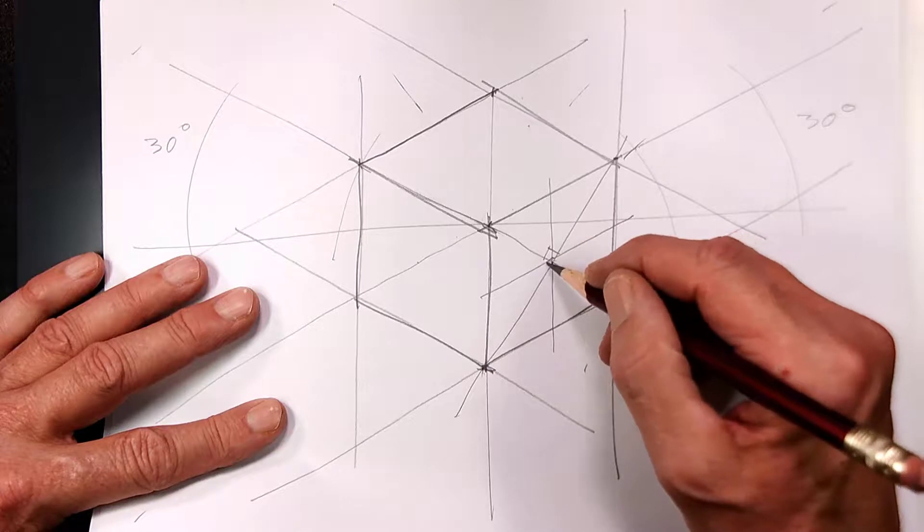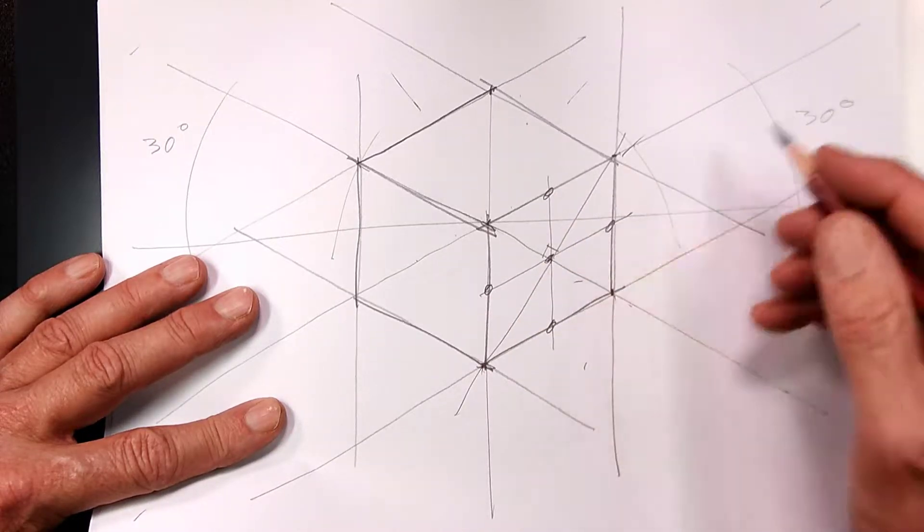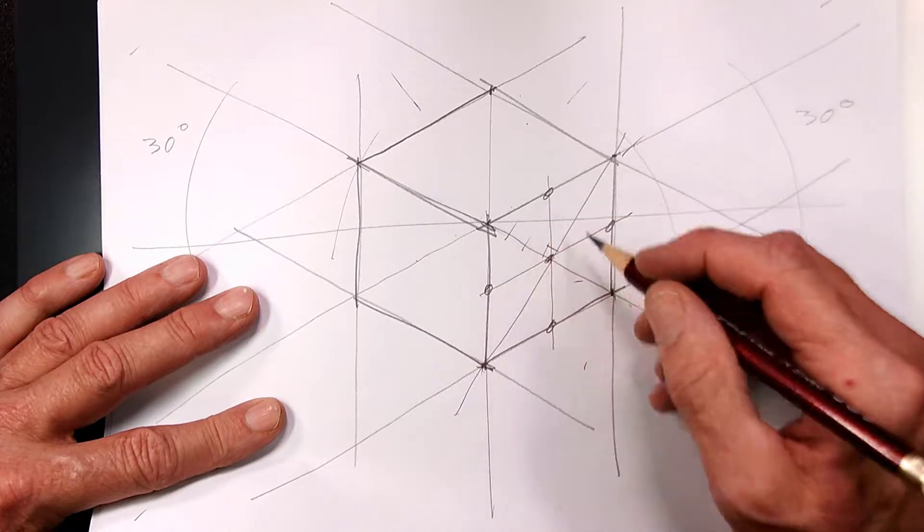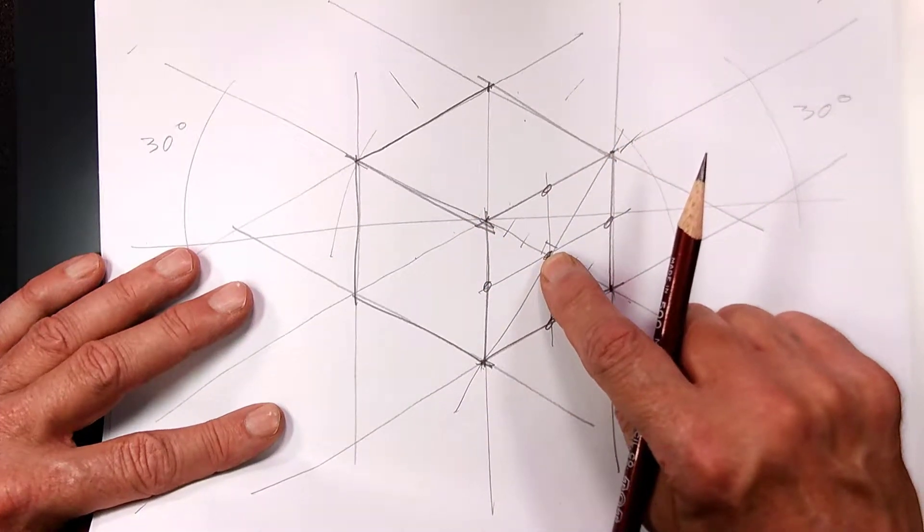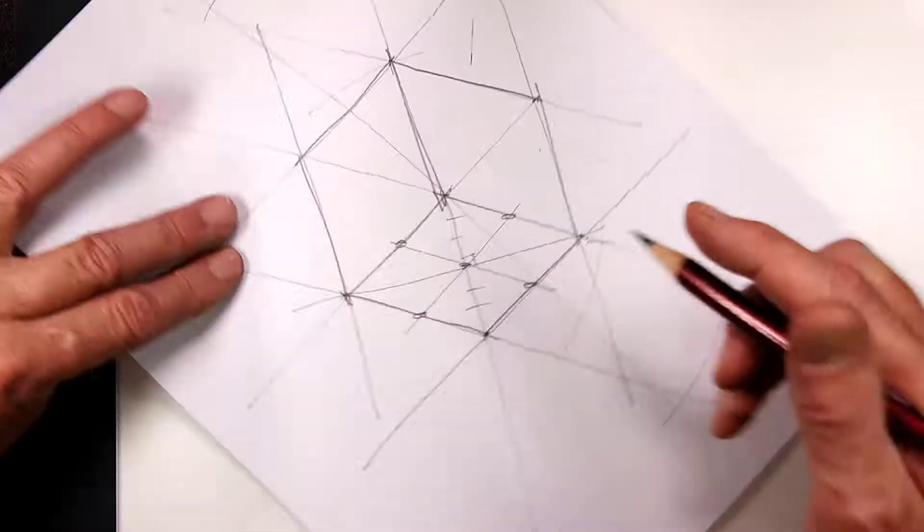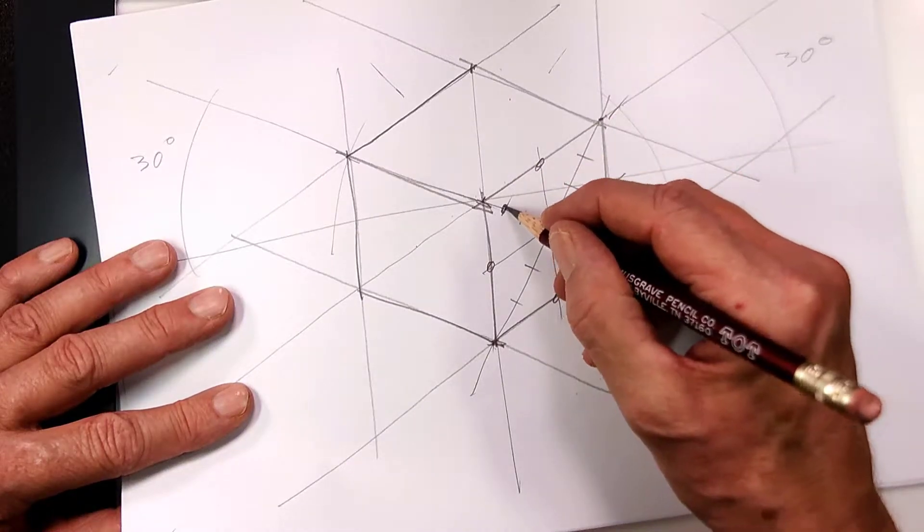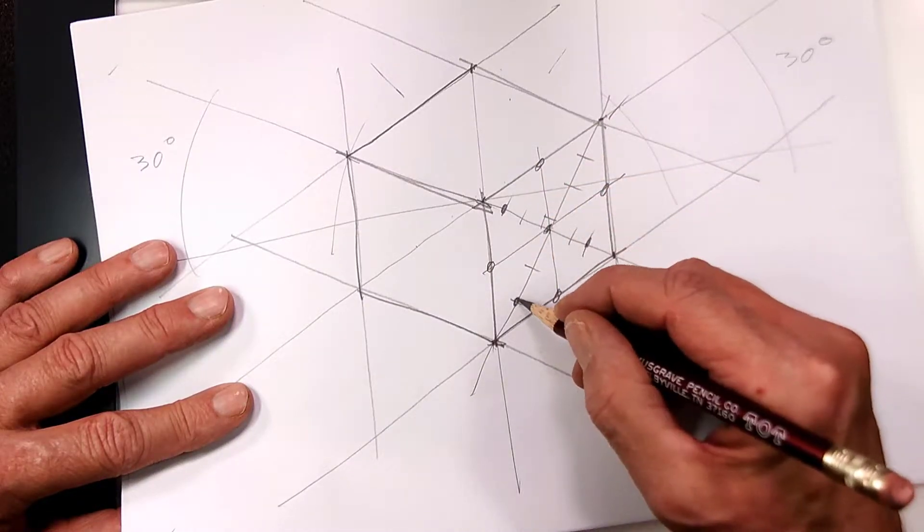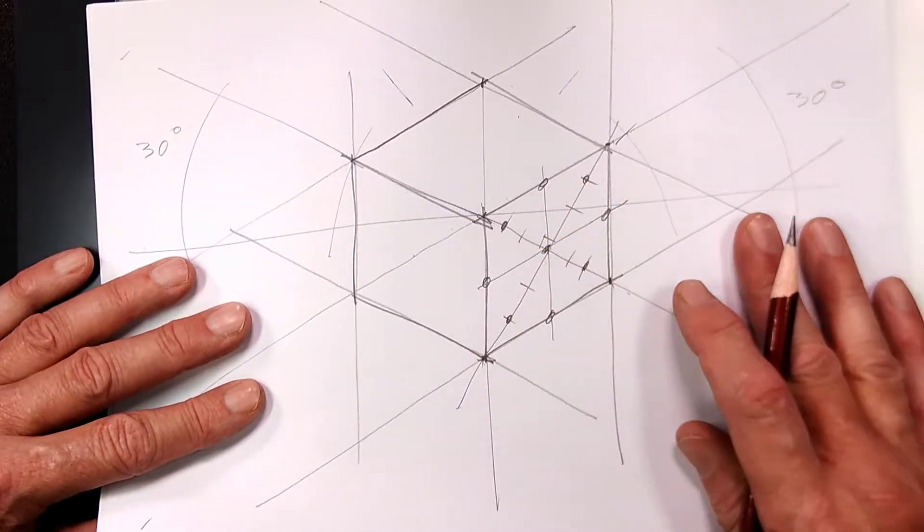What are our eight points for a circle, for an ellipse in this case? Well, we have the four tangent points. And remember last time I showed you, you take each half diagonal and estimate the thirds like that. And then you make a mark on the two thirds. Those are the eight points of our ellipse.